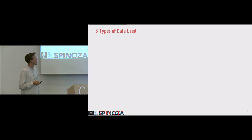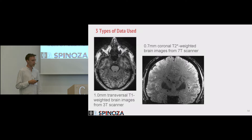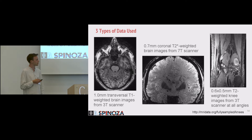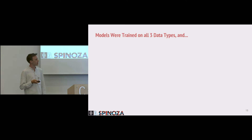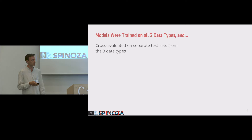In our work, we use three types of data. The first is a 1-millimeter T1-weighted brain image from a 3-Tesla scanner. The second is a 0.7-millimeter T2-star-weighted brain image set from a 7-Tesla scanner. And finally, we use a freely available dataset of knee images from a 3-Tesla scanner at 0.6 and 0.5-millimeter T2-weighted images. We use all three types of data to train the model and show that it's capable of generalizing across different data types not seen during training.